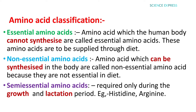Now we discuss the classification of amino acids based on whether the human body can synthesize them or not. There are two types: essential amino acids and non-essential amino acids. Amino acids which the human body cannot synthesize are called essential amino acids — these must be supplied through the diet.